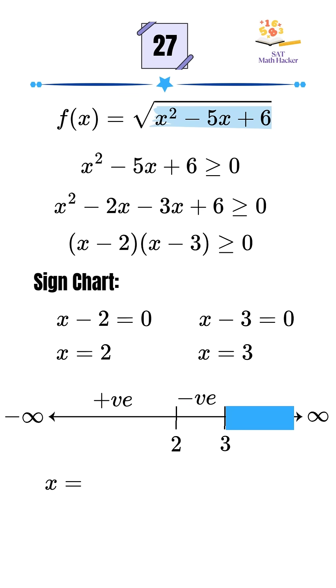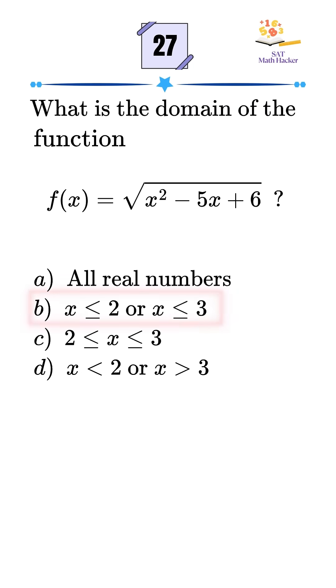In the third interval, try x equals 4. 4 minus 2 times 4 minus 3 is positive. Since we're looking for values where the expression is greater than or equal to zero, it is x less than or equal to 2, or x greater than or equal to 3. That is option B. Follow for more SAT math questions and strategies.